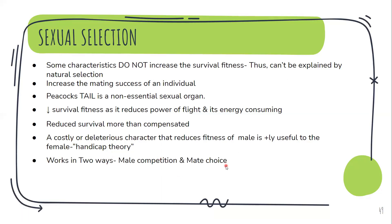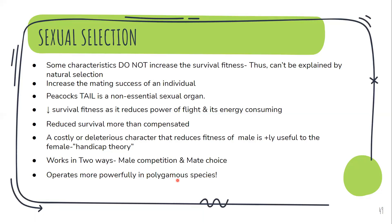Sexual selection works in two ways: male competition and mate choice. The male with a brighter or larger tail is preferred by the female, and thus sexual selection comes into play. This kind of selection operates mostly with polygamous species — those which have multiple mates — so they develop special characters that increase their chances of reproductive events. This is sexual selection.